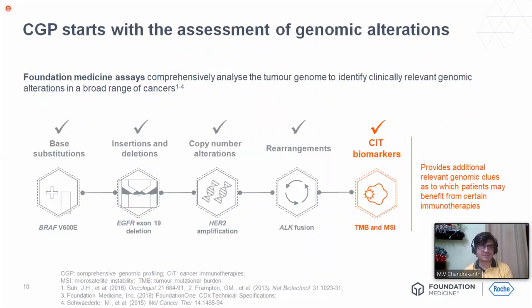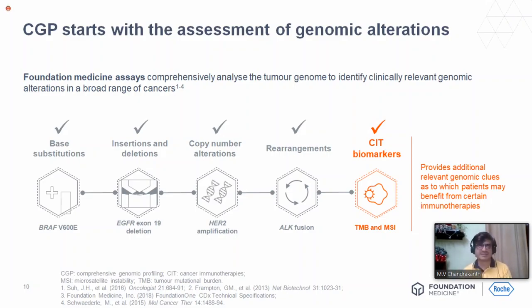CGP starts with the assessment of genomic alterations. Examples: base substitutions — BRAF V600E; insertion/deletions — exon 19 deletion; copy number alteration — HER2; rearrangements — ALK fusion. Now we also have immunotherapy markers. Cancer immunotherapy markers currently include MSI and TMB. PD-L1 and others are mainly assessed by IHC, but genetically we look at tumor mutational burden and microsatellite instability, which help us choose whether a particular tumor will respond to immunotherapy.